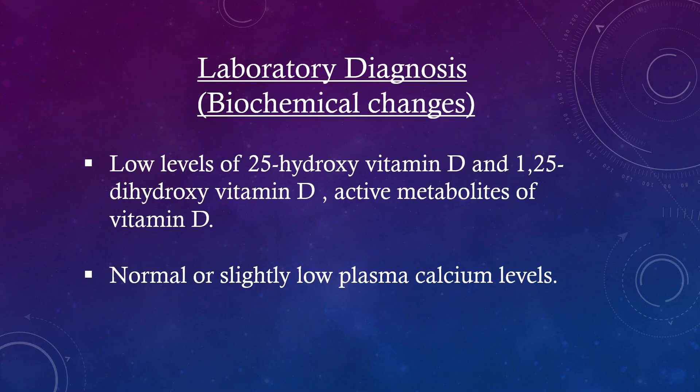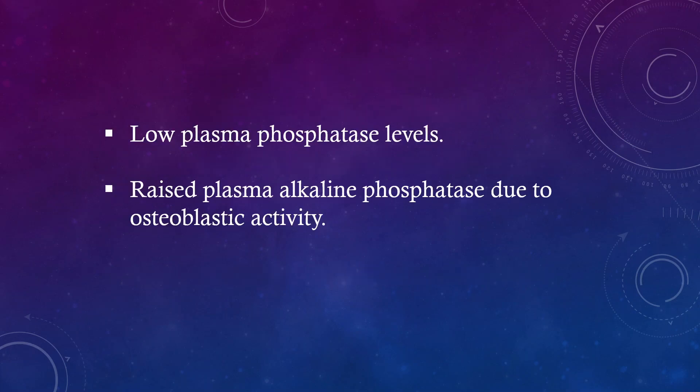Laboratory diagnosis — Biochemical changes. Low levels of 25-hydroxy vitamin D and 1,25-hydroxy vitamin D, the active metabolites of vitamin D. Normal or slightly low plasma calcium levels. Low plasma phosphate levels. Raised plasma alkaline phosphatase due to osteoblastic activity.